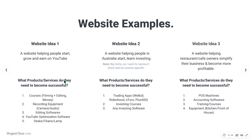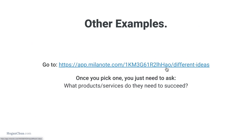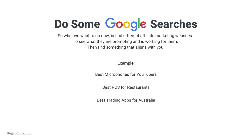After picking a niche, ask yourself: what products and services does this person need to succeed? For example, what does a YouTuber need? Courses on filming, editing, and making money on YouTube; different equipment like cameras, microphones, and audio gear; editing software; YouTube optimization software; and physical items like desks, chairs, and lamps. For helping Australians invest: trading apps like Webull, Robinhood, or eToro; investing courses; or investing software. For restaurants: point-of-sale machines, accounting software, training courses, or kitchen equipment.